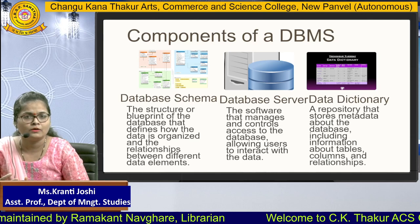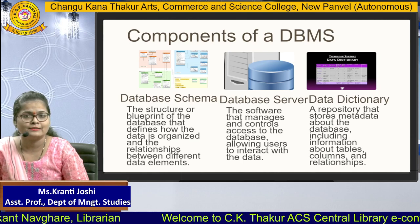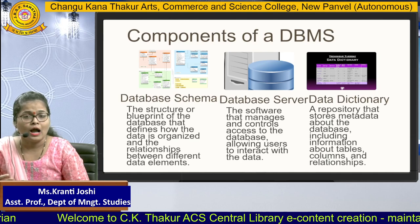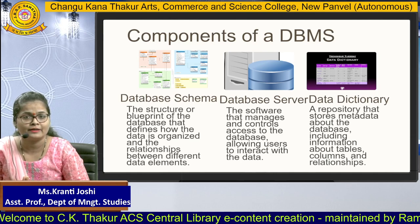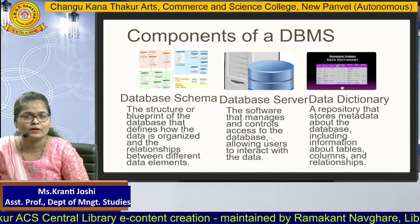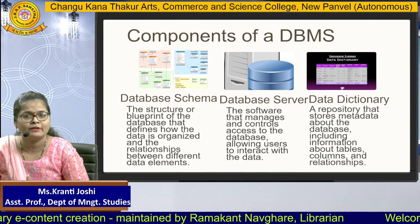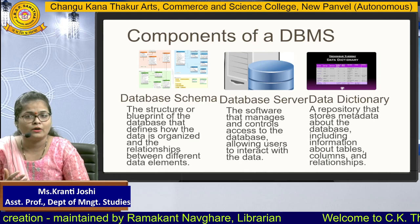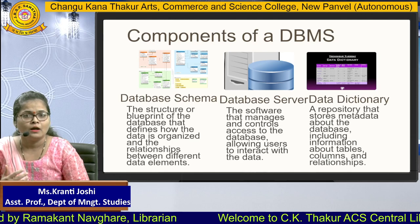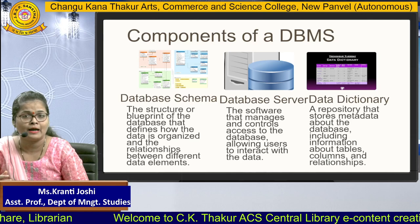For example, there is a table called student. In that table there will be multiple entities like student name, student ID, student class, and student role number. How those entities are related to each other is all defined in the database schema. Next is the database server — the software that manages and controls access to the database, allowing users to interact with the data. Users simply add a query or coding so that they get the data they want.